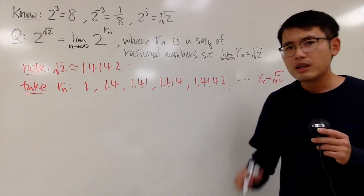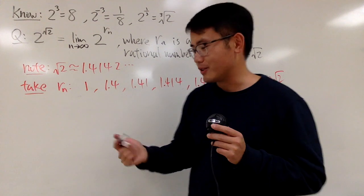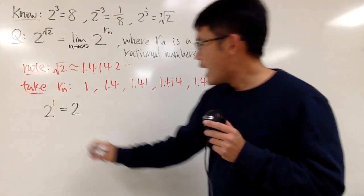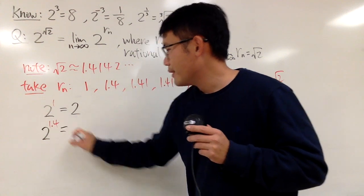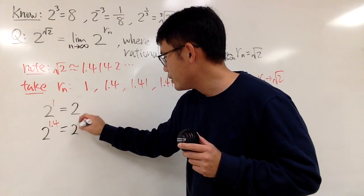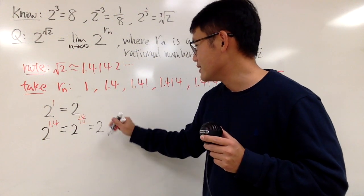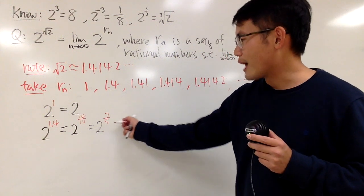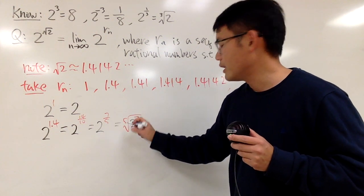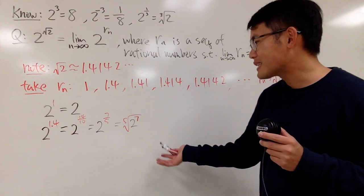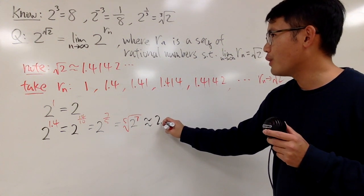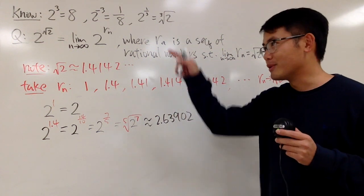So, to make sense of this, we are going to do some computation. First, 2 to the 1st power is just equal to 2. Now, 2 raised to the 1.4 power — 1.4 is the same as 14 over 10, which reduces to 7 over 5. So this is the same as the fifth root of 2 to the seventh power. You can use Newton's method for approximation, and this is approximately 2.63902.